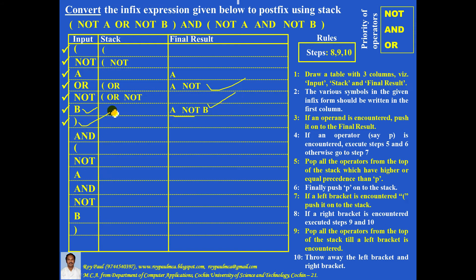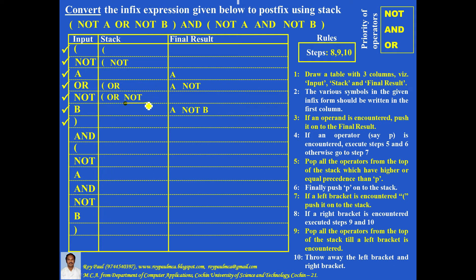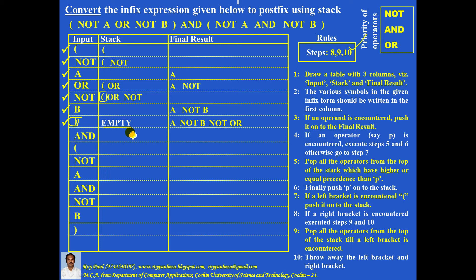If a right bracket is encountered, two things are to be done. Step 9: remove all operators from the top of the stack until you get a left bracket — removal always goes to the final result. So NOT comes first, then OR. After that you get a left bracket. Step 10: throw away the left bracket and the right bracket. The stack is now empty.